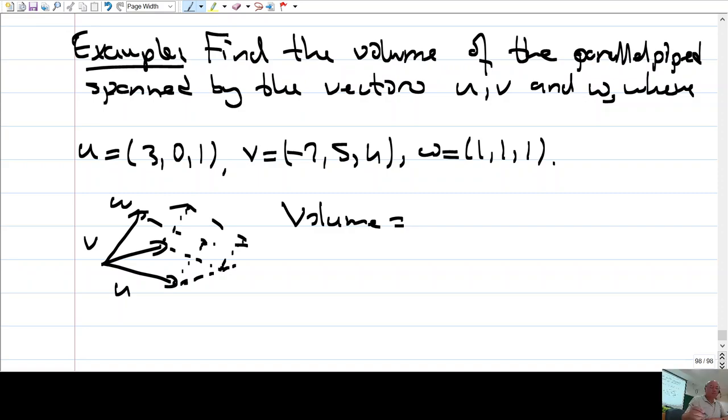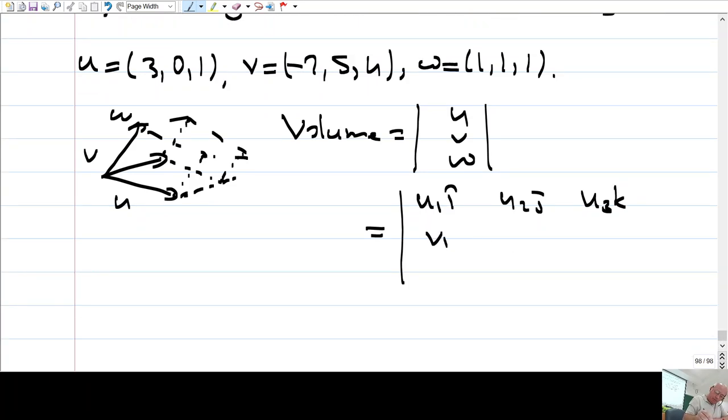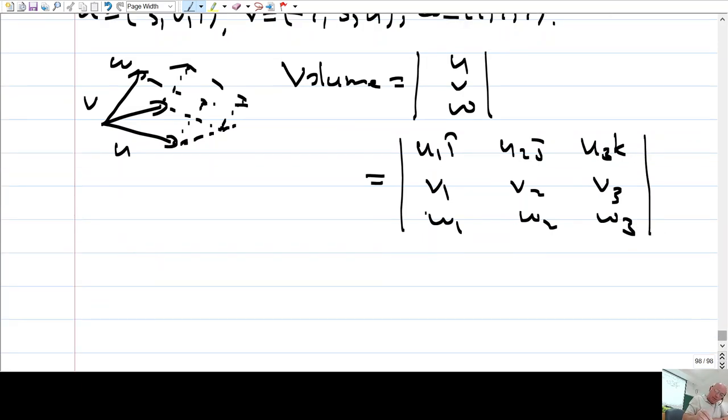The volume is just the absolute value of the determinant of these three vectors. I have u here, v here, and w.